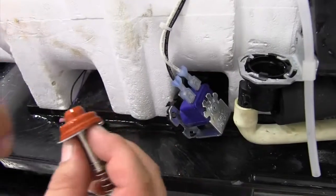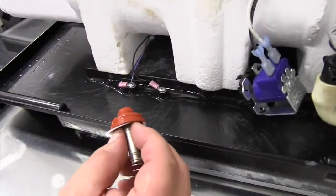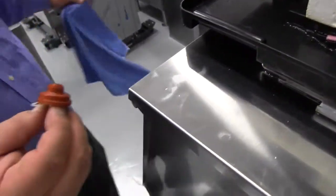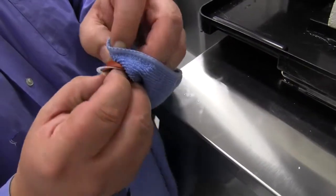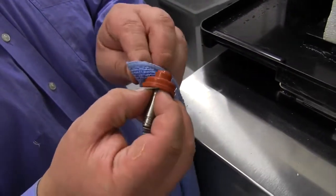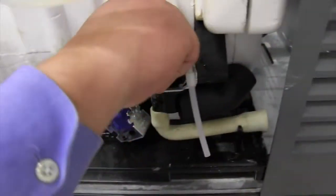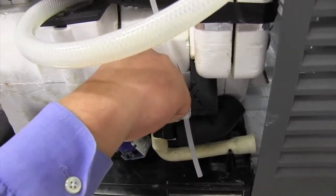This plunger is nice and clean, but if not, you can just take your regular rag or paper towel and wipe it off. The scale should just fall off, and then we're going to stick that plunger back in.